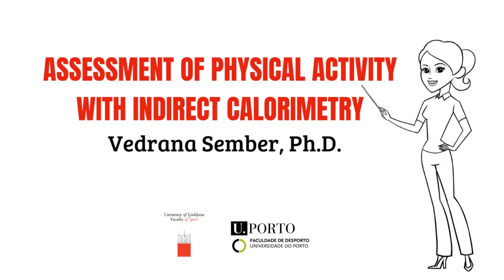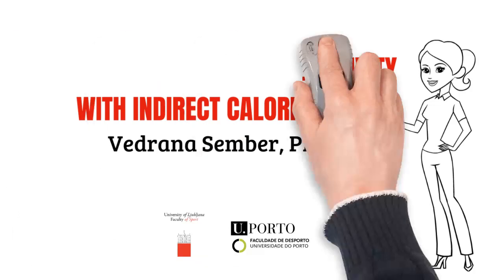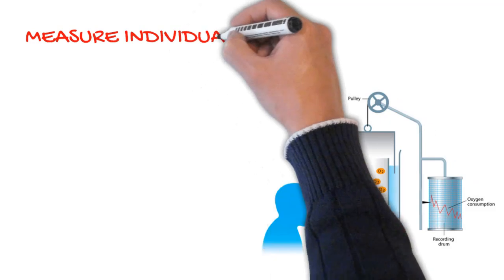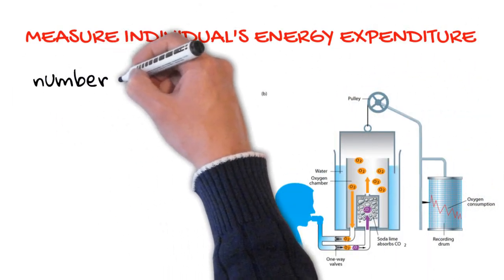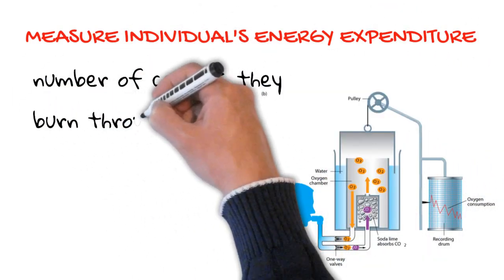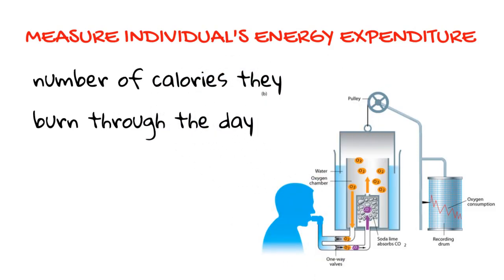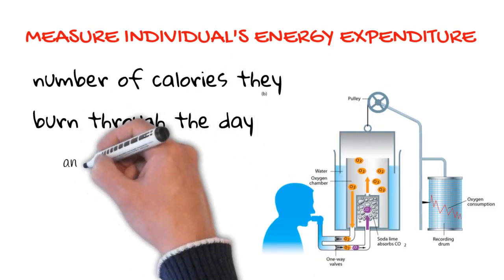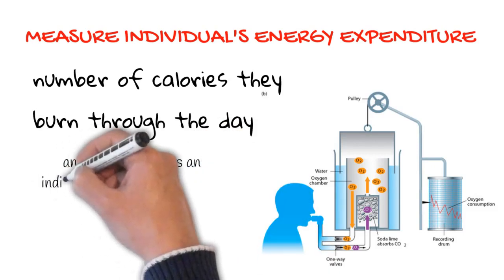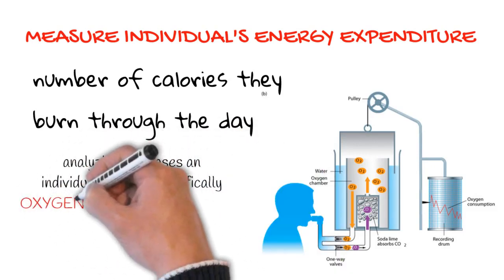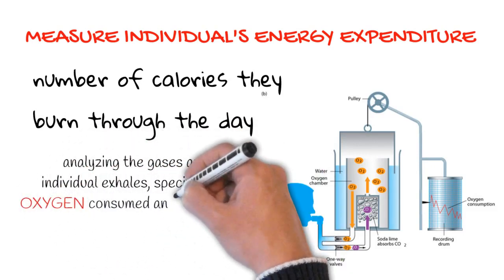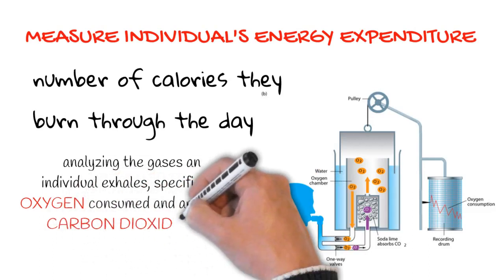Indirect calorimetry is a technique that has been used for many years to measure an individual's energy expenditure, which is essentially the number of calories they burn throughout the day. It works by analyzing the gases an individual exhales, specifically the amount of oxygen they consume and the amount of carbon dioxide they produce.